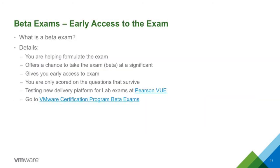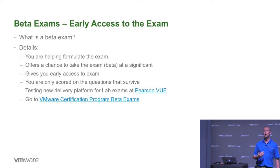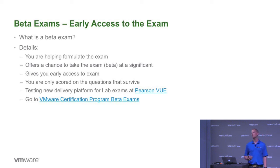On beta exams — this gives you access to an exam before it goes GA. For VCAP exams that normally cost $400, the beta exams are only $100. You don't get your results right away, but it's a good way to get your foot in the door for a lot cheaper than a standard GA exam.